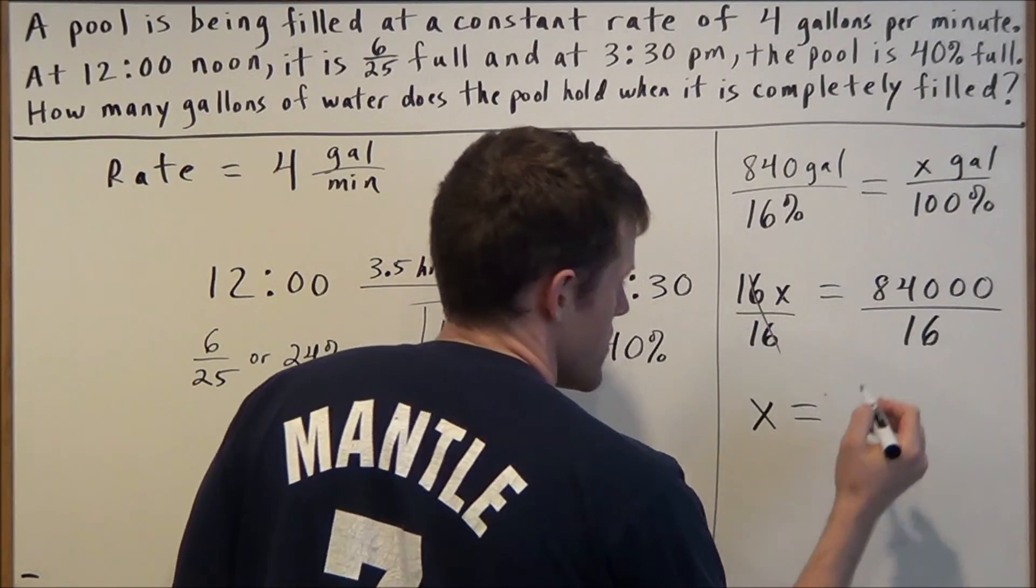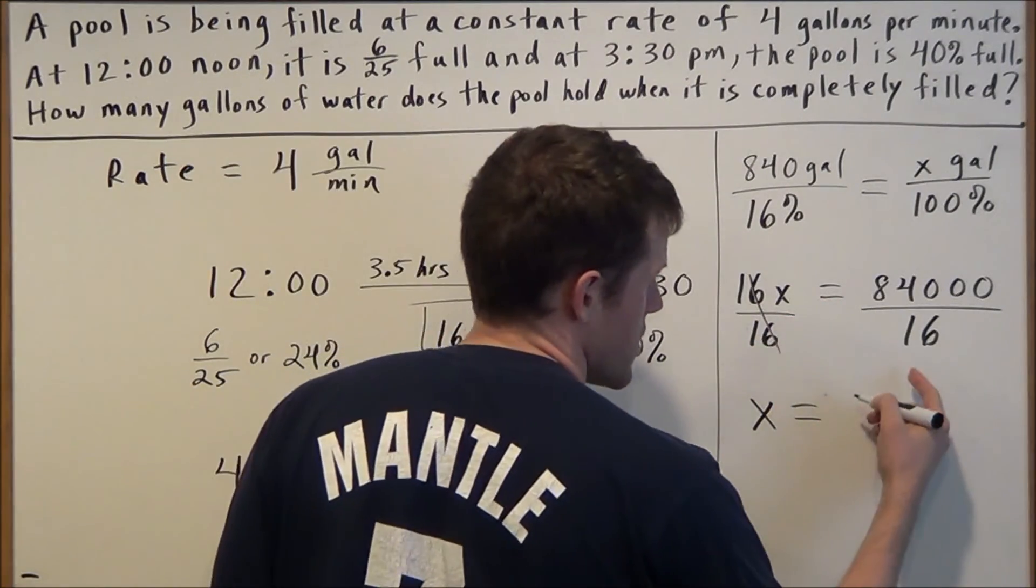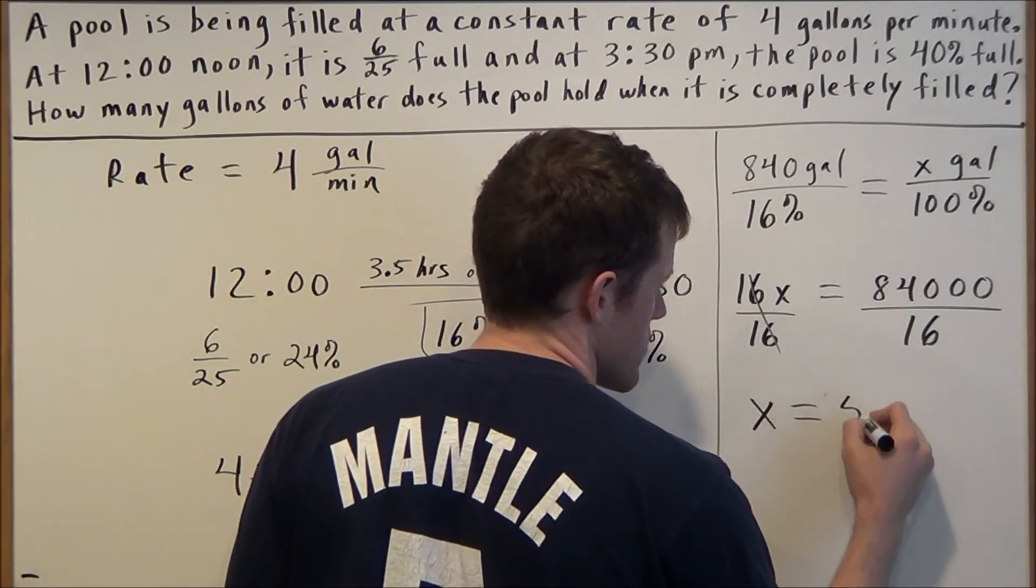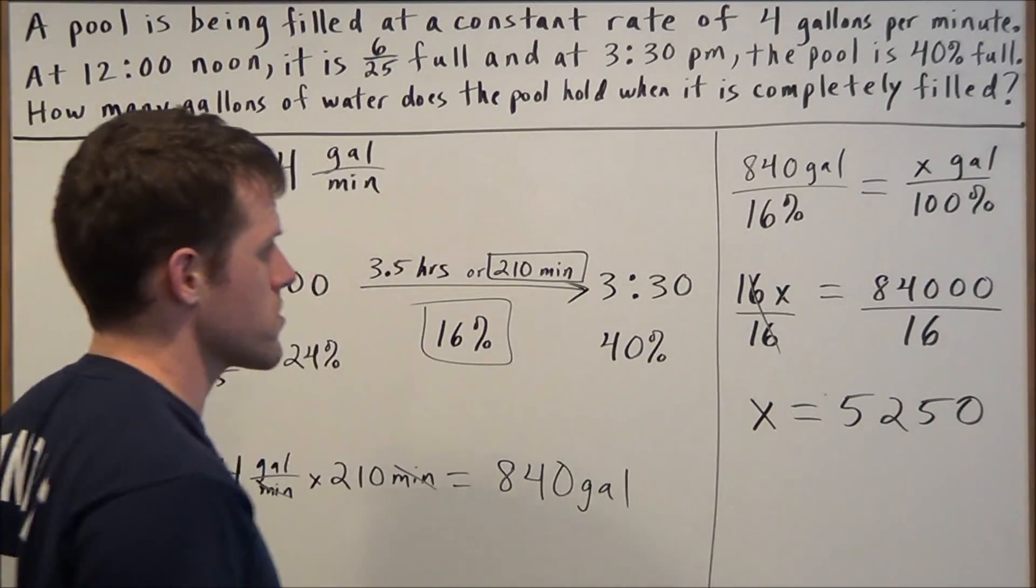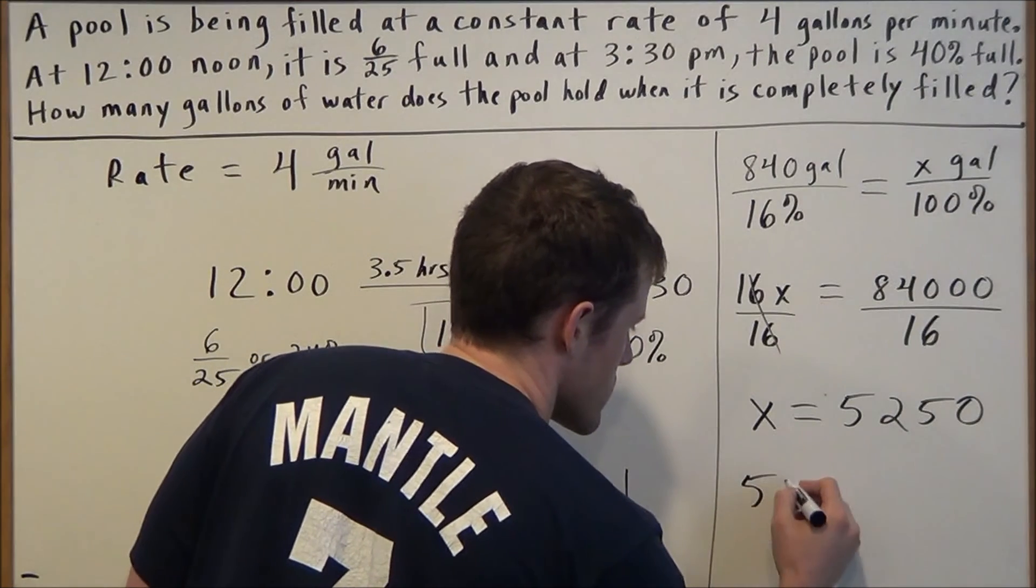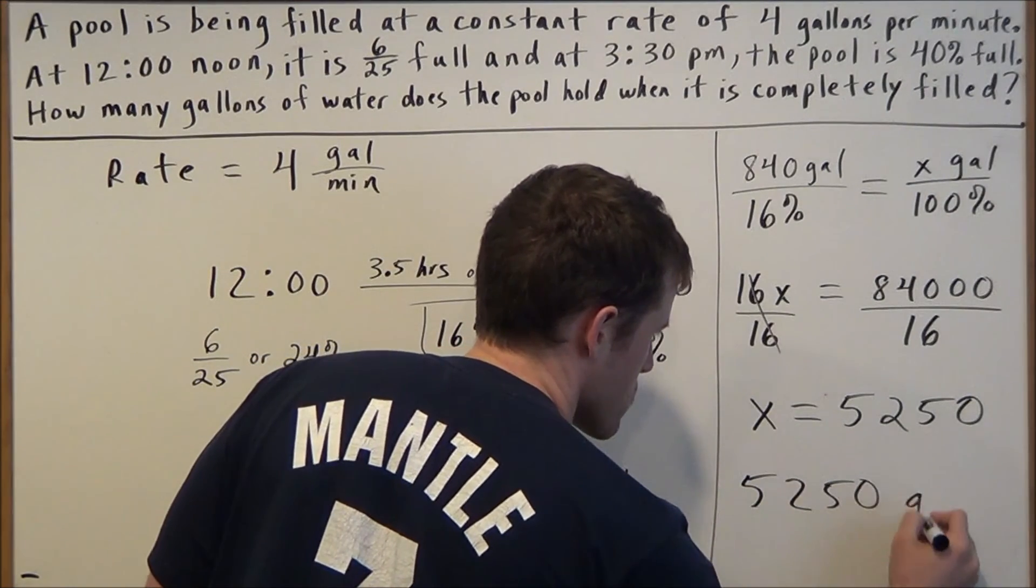We divide both sides by 16, and 16 is going to go into 84,000 5,250 times. So the answer to this problem: 5,250 gallons the pool holds.